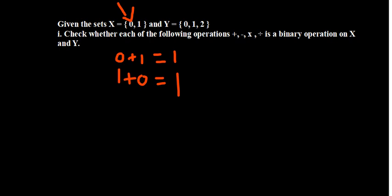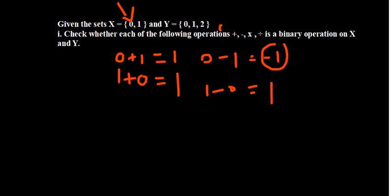How about subtraction on set X? You have zero minus one, which gives negative one, and one minus zero gives one. You have one result — negative one — that is not part of the set. So subtraction is not a binary operation on X.